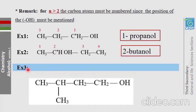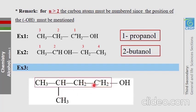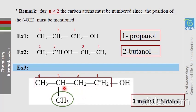Let's work through example 3 together. Find the longest chain: 1, 2, 3, 4 — both chains are the same length, so take either one. Number the carbons, locate the branch, and name it. The result is 3-methyl-1-butanol.